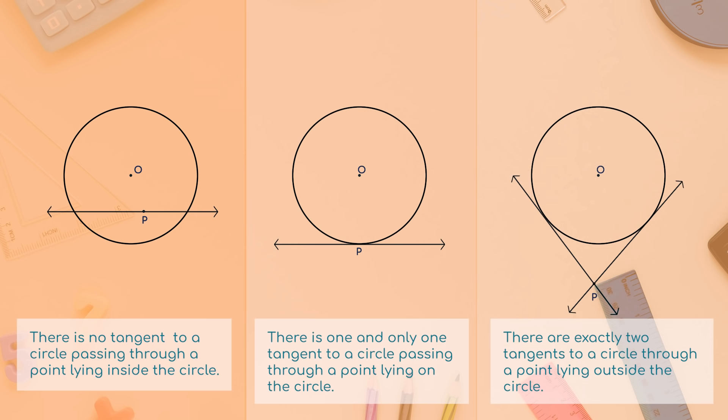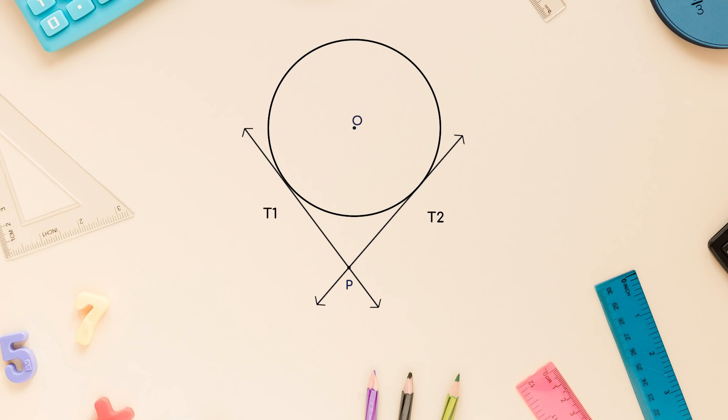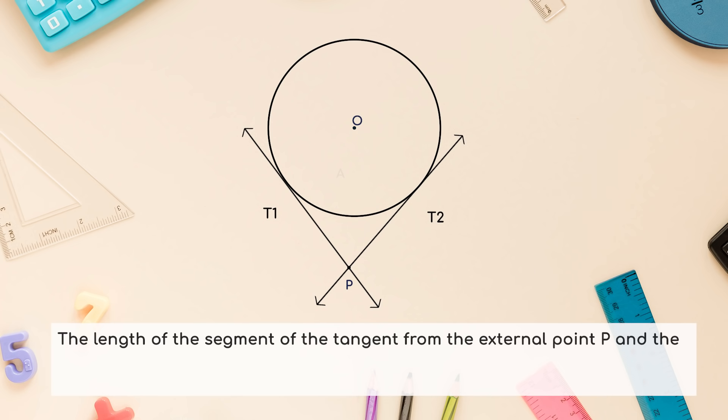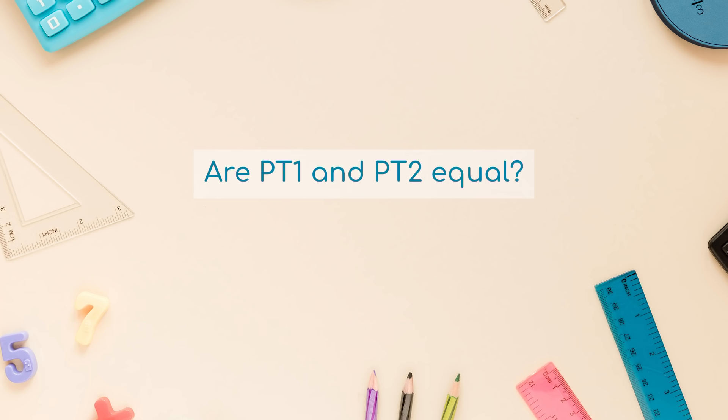Case 3: there are exactly two tangents to a circle through a point lying outside the circle. T1 and T2 are the points of contact of the tangents PT1 and PT2 respectively. The length of the segment of the tangent from the external point P and the point of contact with the circle is called the length of the tangent from the point P to the circle. Are PT1 and PT2 equal? Can you guess why? Let's see.